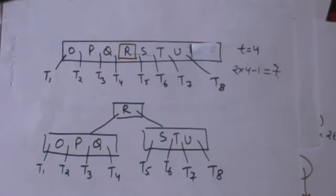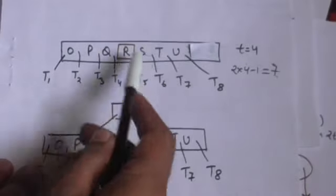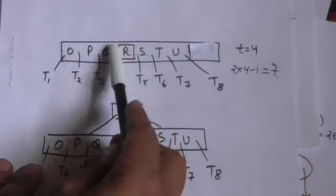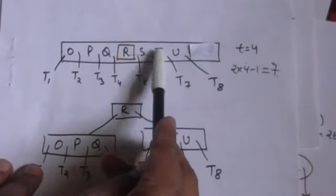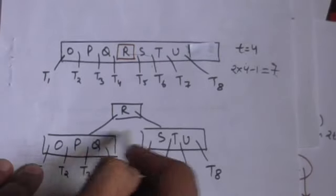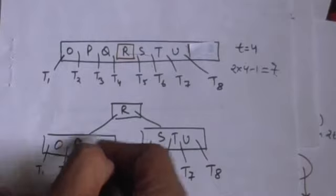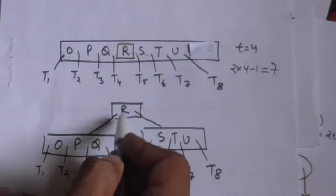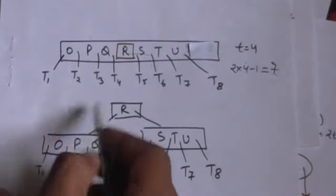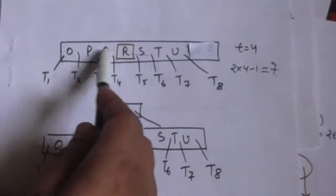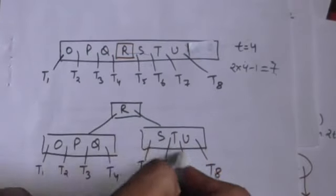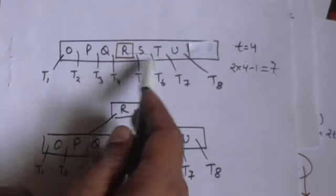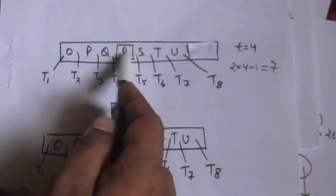Key R is at the mid of this full root node. To split this full root node, a node containing only key R will become the new root of this B-tree. This full root node will be divided into two separate nodes, both children of the new root. The child at the left of key R will contain all keys and children which were at the left of key R in the full root node, and the child at the right of key R will contain all keys and children which were at the right of key R.